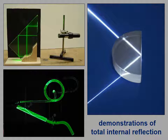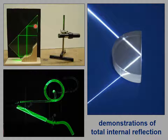Here are some demonstrations of total internal reflection. In this top picture, light travels into the glass, hits the boundary at greater than the critical angle, is repeatedly reflected, and comes out the other side.